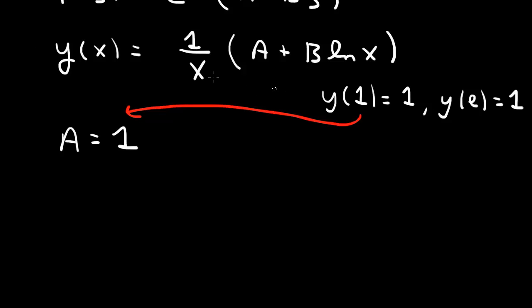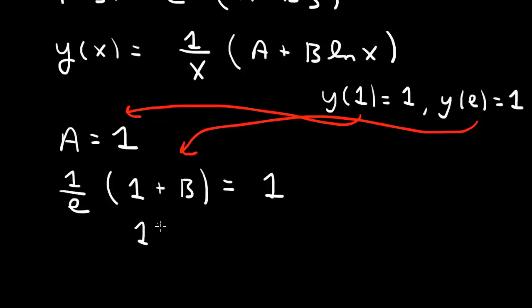The second condition, y of e, we get a 1 over e. 1 over e. A is 1. So times 1. Log of e. Log of e is 1. So 1 plus B. And that's supposed to be equal to 1. So y of e is 1 over e times A, which is 1 plus B log e. Log e is 1. So plus B. That's supposed to be equal to 1. So we get 1 plus B equals e, which tells us that B is equal to e minus 1.